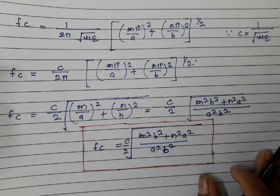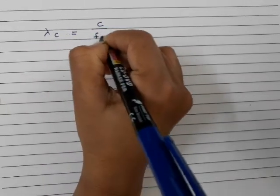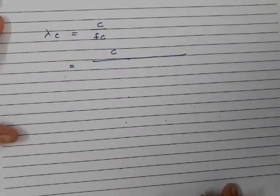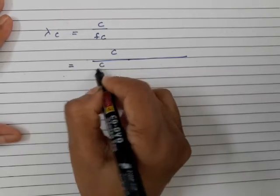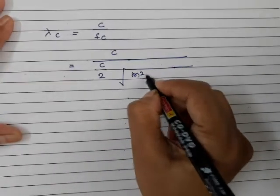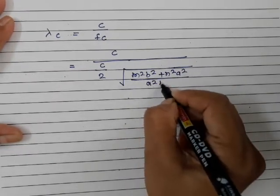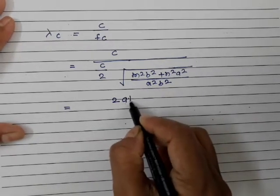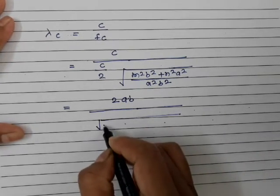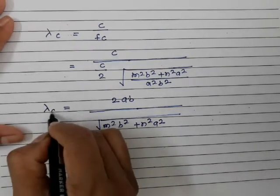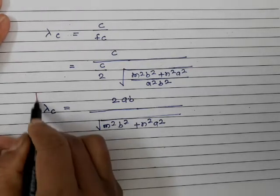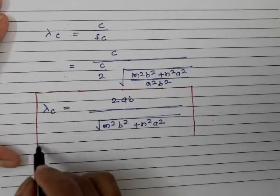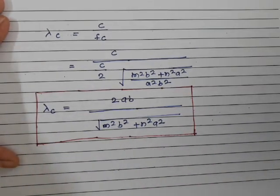So λc = c/fc. Substituting the expression for fc — which is c/2 × √(m²b² + n²a²)/(ab) — the c terms cancel, giving a factor of 2. Therefore, the cutoff wavelength λc = 2ab / √(m²b² + n²a²).